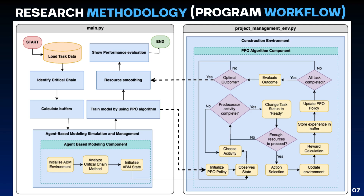The model workflow starts by loading task data and identifying critical and non-critical chains to define key tasks. Buffers are strategically positioned to handle delays. Using agent-based modeling, scenarios are simulated for resource optimization. The PPO algorithm then dynamically manages scheduling, tracking tasks and adjusting strategies through continuous feedback. The process concludes with resource smoothing and performance evaluation, refining efficiency with each simulation.